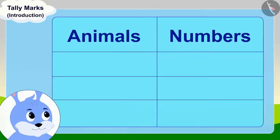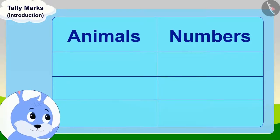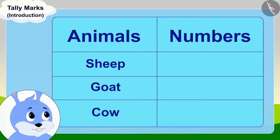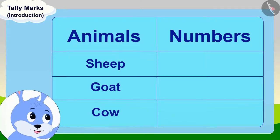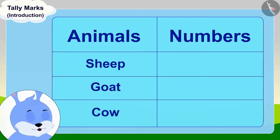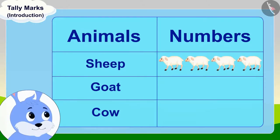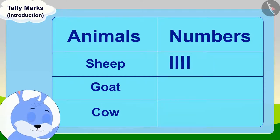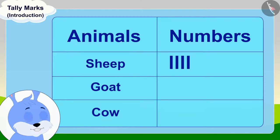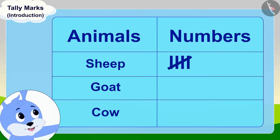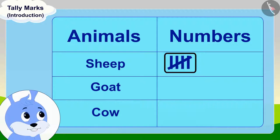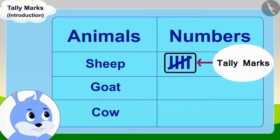Bunny said, it is very easy. First, you make a table like this and write the names of all the things you have to count in it. Now, suppose you want to count your sheep first. You first draw four lines like this for four sheep. And then, for the fifth sheep, make a slant line like this on these four lines. We call these groups of five lines tally marks.